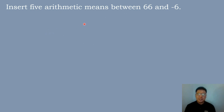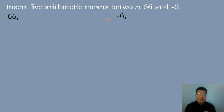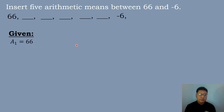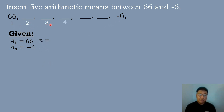Let's now have our second example: insert 5 arithmetic means between 66 and negative 6. We write 66 and negative 6 and insert 5 blanks between them. Then we identify the given: a sub 1 equals 66, the first term; a sub n equals negative 6, the last term. Counting the terms: 1, 2, 3, 4, 5, 6, 7 — so there are 7 terms, and n equals 7.